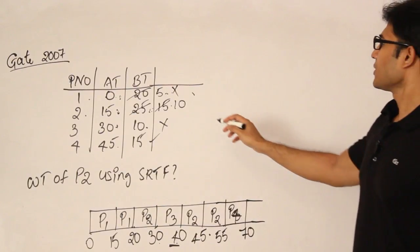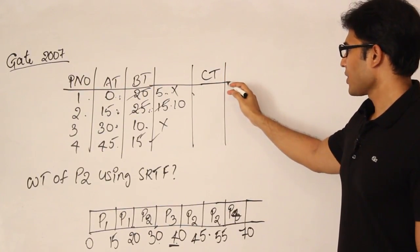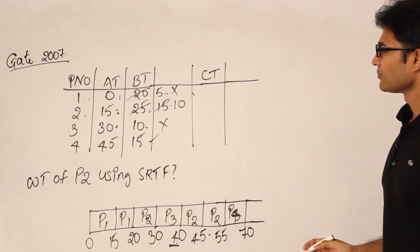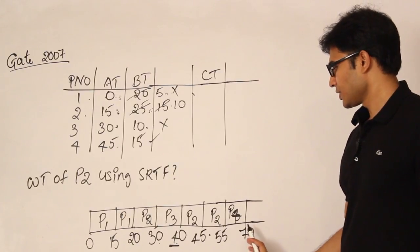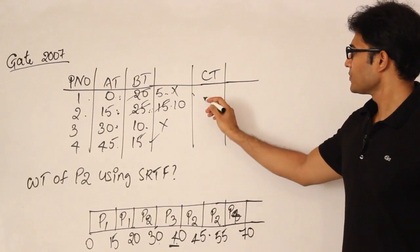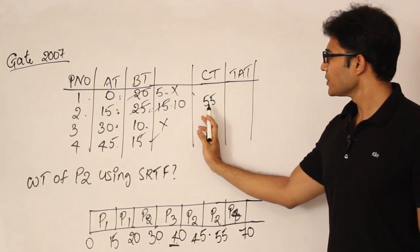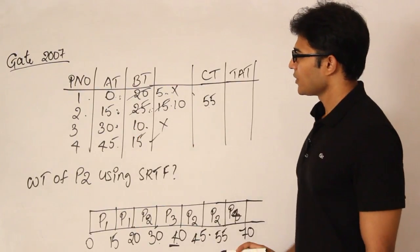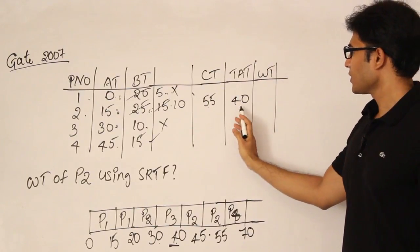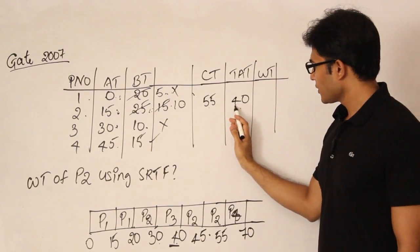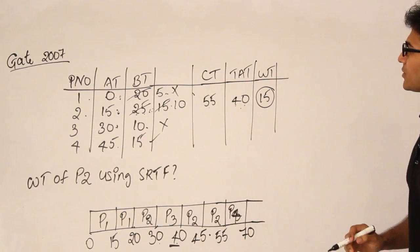Now let's see the completion time of all the processes. Even though they are asking for only P2, you can only write for P2 and then you can find it out. But okay I want to do everything. Or you can just choose it like P2. Let's solve for P2 first. Now P2's completion time is 55. And therefore what is the turnaround time of P2? Turnaround time of P2 is completion time minus arrival time, which is nothing but 40. And what is the waiting time then? Waiting time is turnaround time minus burst time. Turnaround time is 40. And the burst time is 25. Therefore waiting time is 15. This is the answer.